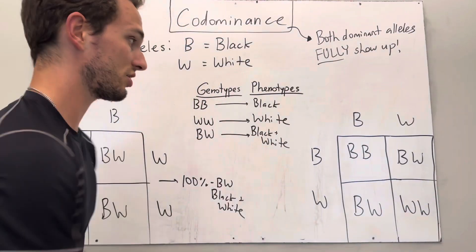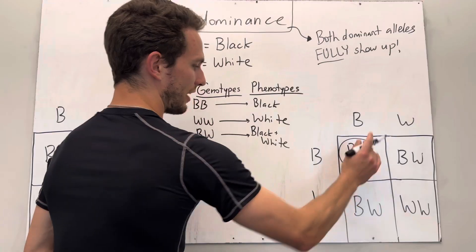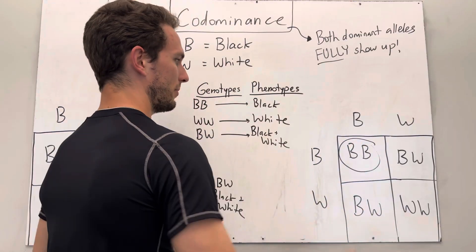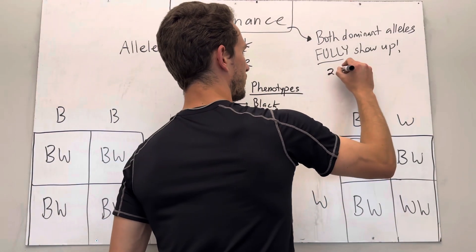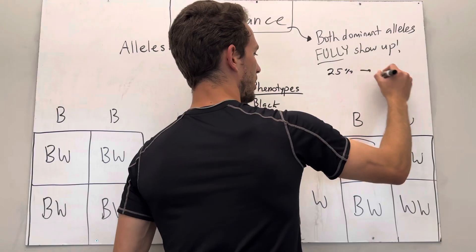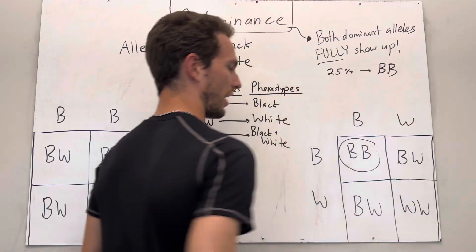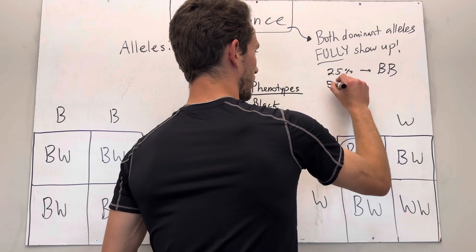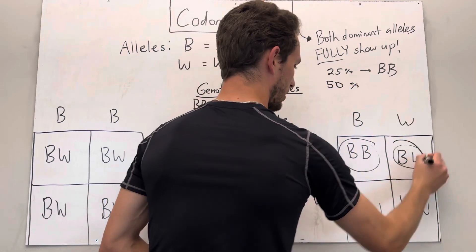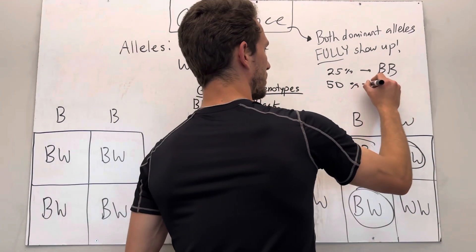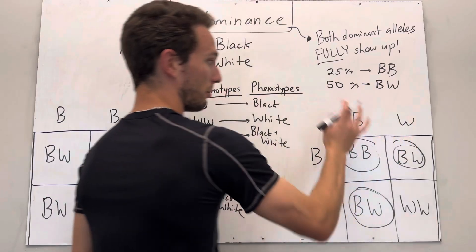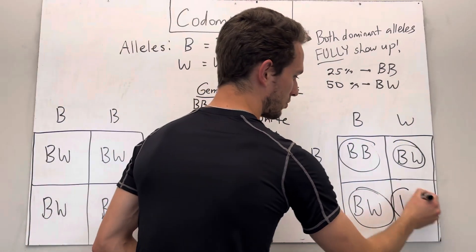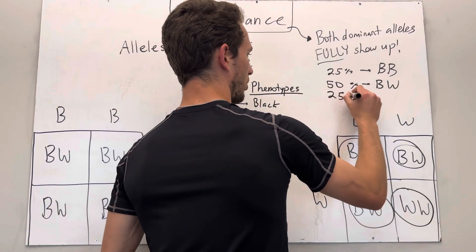In this case, we have 25%, so one quarter of them shown up here, 25% will be BB offspring that would be black. 50%, we see here, one, two out of the four, will be BW, which will be a black and white coat. And then the last one of four, 25%, will be WW, which will be a white cat.